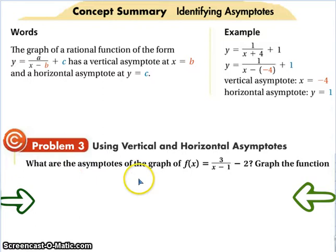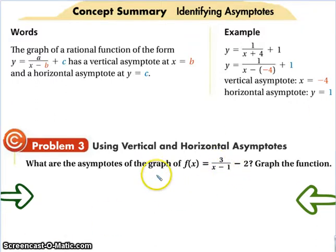So, what are the asymptotes of this? Well, the vertical would be 1. So, the vertical asymptote would be x equals 1. And the horizontal asymptote would be y is equal to negative 2.